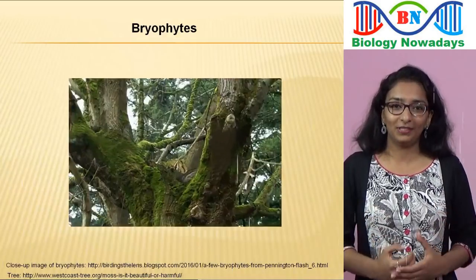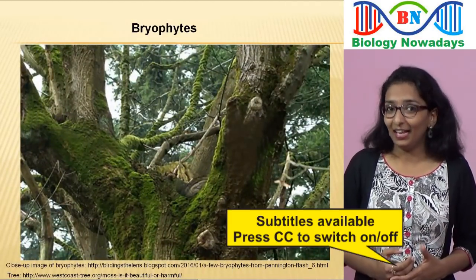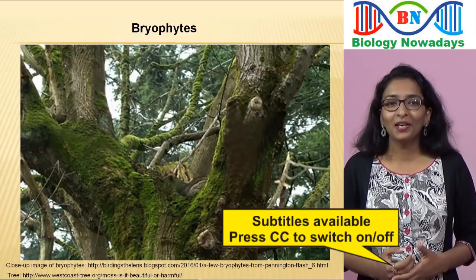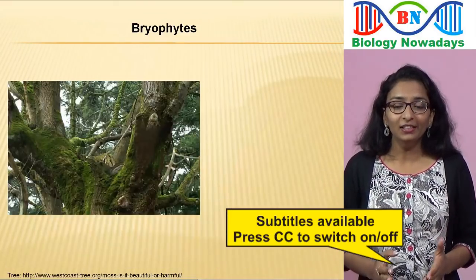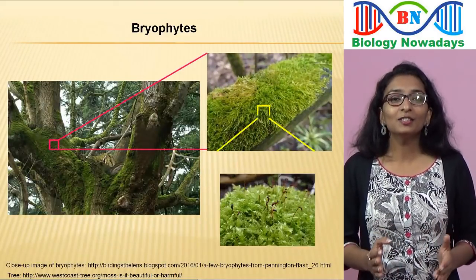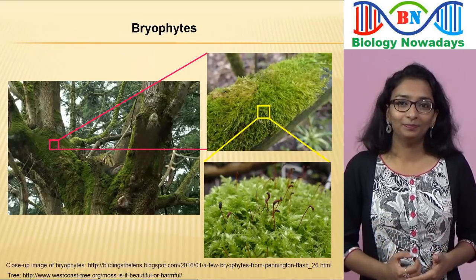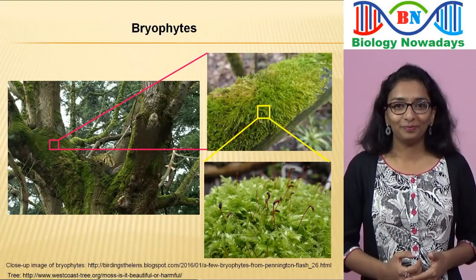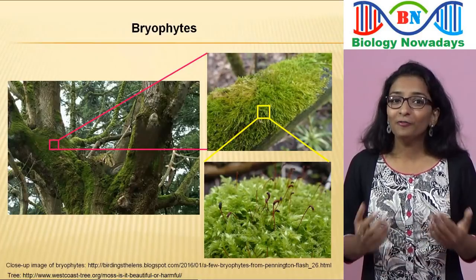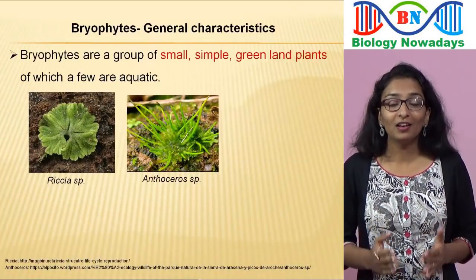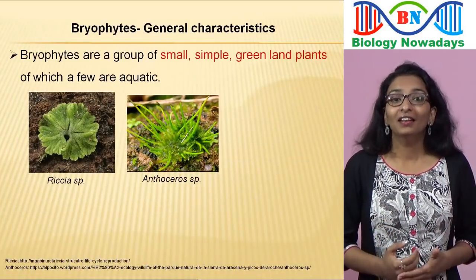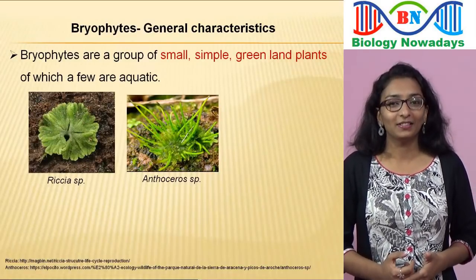Usually after some showers of rain, you may have noted that bark of trees, moist ground and walls are often covered with a bright green carpet. At first you may think that it is algae or lichens. But if you observe closely, you will find that it consists of tiny green plants. They belong to the group bryophytes. So bryophytes are a group of small, simple, green, land-dwelling plants of which a few are aquatic.